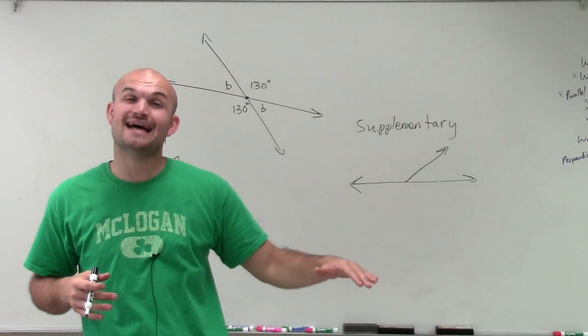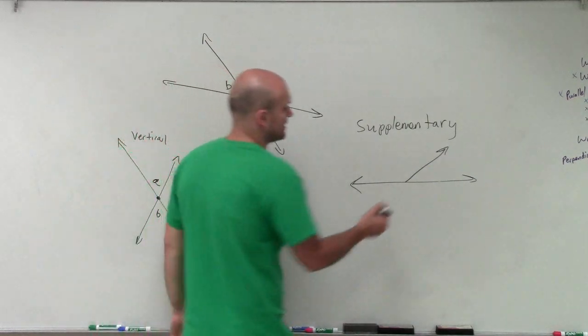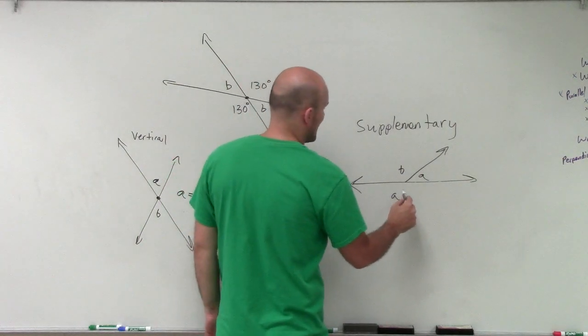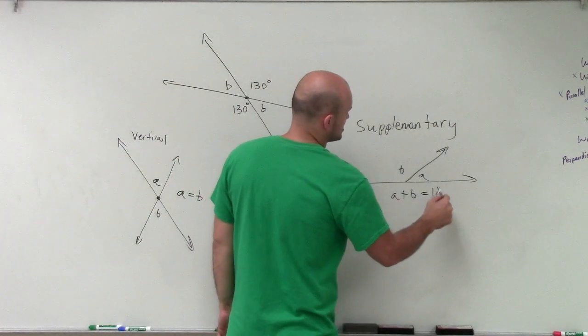Well, a straight line has a measure of 180 degrees. So if I had my two angles, A and B, I could say that A plus B equals 180.